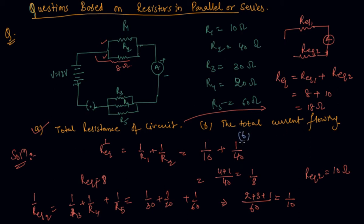So the total current flowing through the circuit, V is equals to IR. So we know the value of V, and we know the value of V as 12 so 12 by 18 would be the value of I. So it is coming out to be 2 by 3 or you can say it is 0.66 ampere. So this is the value of the total current flowing through the circuit.